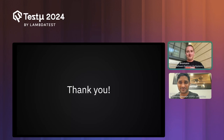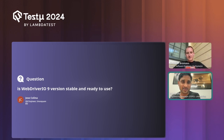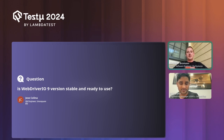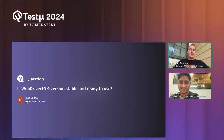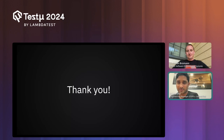Q: Is WebdriverIO version 9 stable and ready to use? A: Generally yes, it is stable and you can start using it. There are some edge cases where regressions were introduced, especially as we rewrote the selector engine, so there are some use cases where version 9 might break existing tests. You can try it, and if version 9 works for you upgrade now — if not, wait a bit while we fix the remaining issues we're currently resolving.